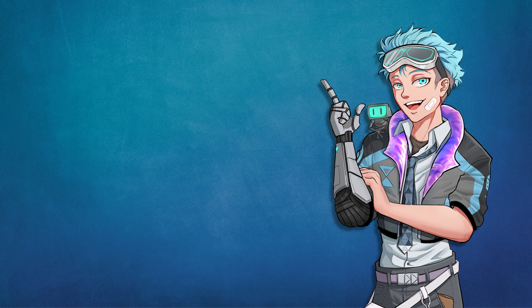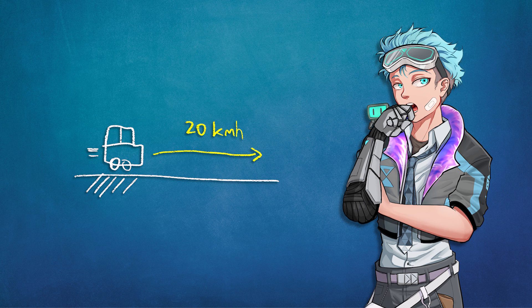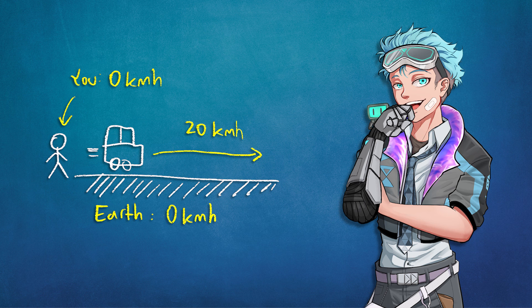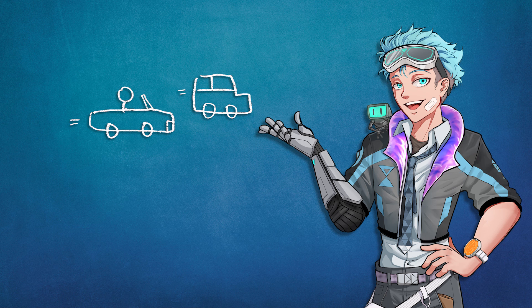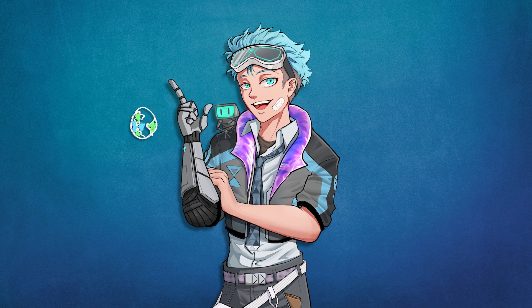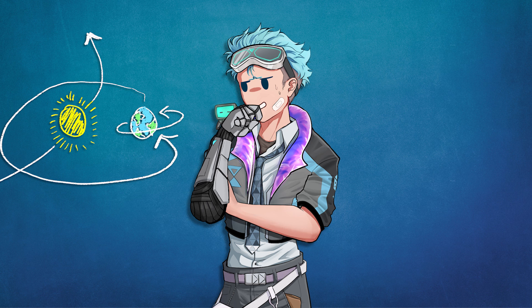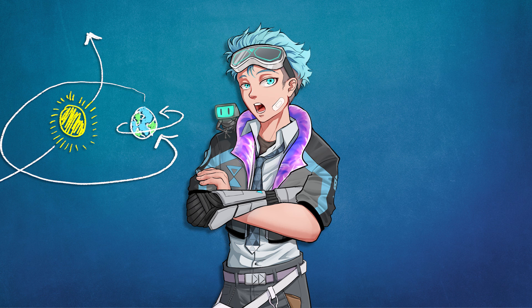One last thing you should be aware of is the frame of reference — an abstract coordinate system specified by a set of reference points. It's essentially the coordinate system that you base a particular movement on. A car going 20 kilometers an hour to the right is actually 20 kilometers an hour relative to Earth, or to you if you're standing still. The Earth in this case is the frame of reference. If you're in a car going 5 kilometers an hour in the same direction, the car would still be 20 km/h relative to Earth, but only 15 km/h relative to you. In reality, the Earth isn't staying still — it's rotating and revolving around the Sun, the Sun is revolving around the center of the Milky Way, and the Milky Way is moving toward who knows where.